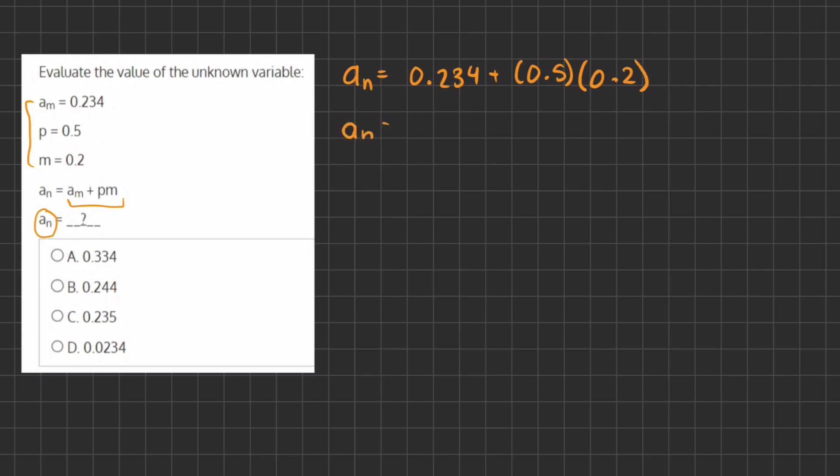So now let's start simplifying. We have 0.234 plus 0.5 times 0.2,